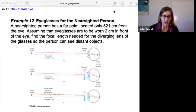So let's look at an example here. Eyeglasses for a nearsighted person. This is very relevant to myself. A nearsighted person has a far point located only 521 centimeters from their eye. So assuming that they do not have their glasses on, right, they can only see things that are about five meters away. Assuming that eyeglasses are to be worn two centimeters, about an inch in front of the eye, find the focal length needed for the diverging lens of the glasses so the person can see distant objects. Okay, so there's a couple of things to take into account. Notice we only have two numbers here, 521 centimeters and two centimeters.